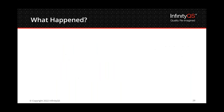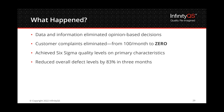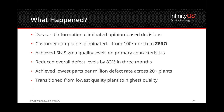By gathering data and extracting meaningful information, the team completely eliminated opinion-based decisions. Their customer complaints, which had averaged 100 per month, were completely eliminated within just one month — going from 100 to zero. They achieved Six Sigma quality levels on all primary characteristics, reduced overall defect levels by 83% in three months, and achieved the lowest parts-per-million defect rate across all 20-plus plants in the corporation. They literally transitioned that plant's quality from the worst to the best in the entire corporation in less than three months.